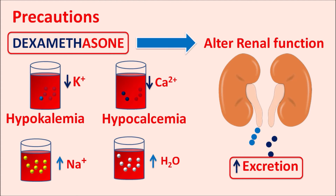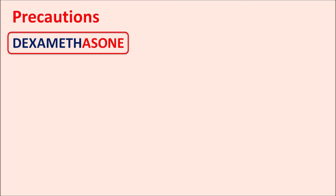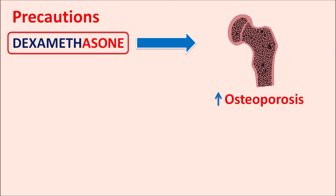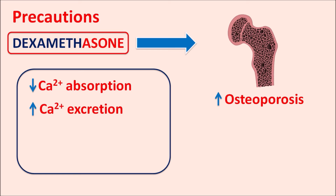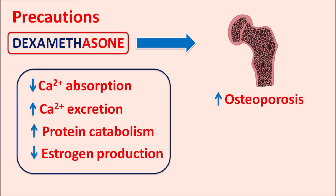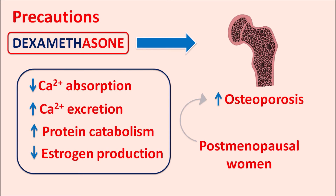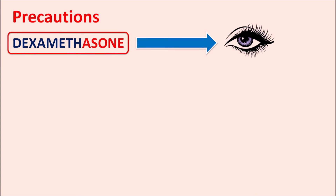Due to increased serum sodium and water levels, dexamethasone can increase blood pressure. Care should be taken in patients already having elevated blood pressure or fluid retention. This drug can also affect the bones, resulting in increased osteoporosis and osteonecrosis. This is particularly due to the drug's effect on calcium — it reduces calcium absorption and increases calcium excretion. It can also increase protein catabolism and reduce estrogen production, all of which increase the risk of osteoporosis, particularly in postmenopausal women.